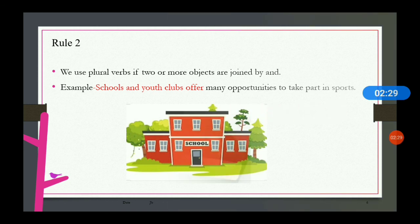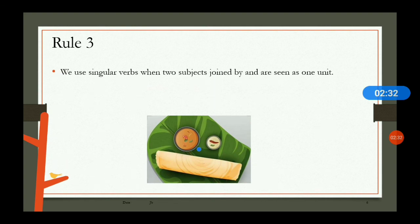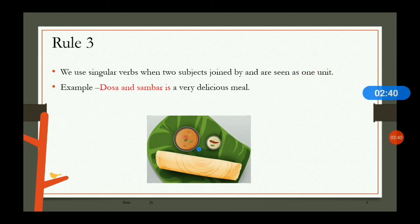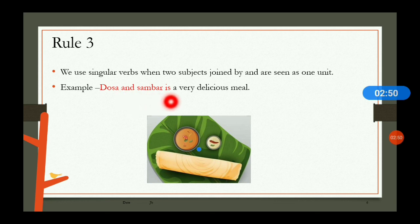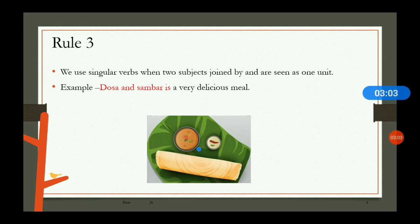Rule number three: we use singular verbs when two objects joined by 'and' are seen as one unit. For example, 'dosa and sambar' is considered one unit, so we use a singular verb: 'dosa and sambar is a very delicious meal.' Similarly, 'bread and butter' takes a singular verb when considered as one unit.